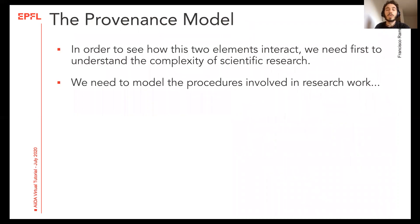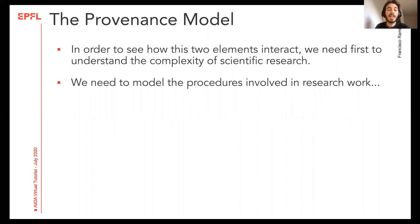To understand this we first need to analyze and model how the process of doing computational research works. For this we will use what we call a provenance model, which in this case will represent the whole process as a graph of nodes. We will see that this representation will not only help us to understand the problem but will also help us when we are trying to solve it.